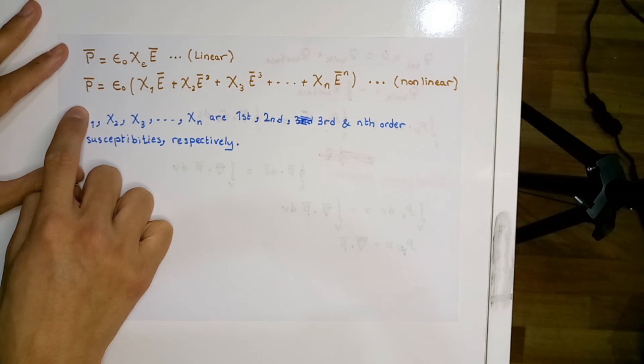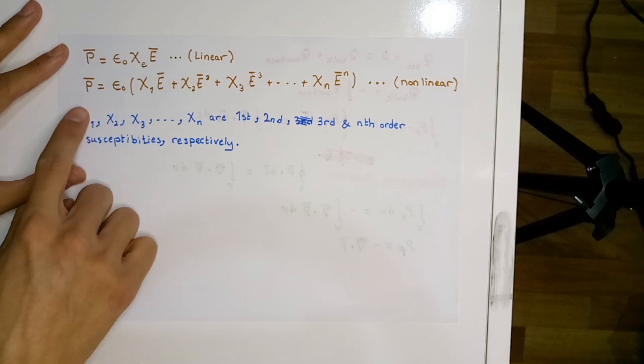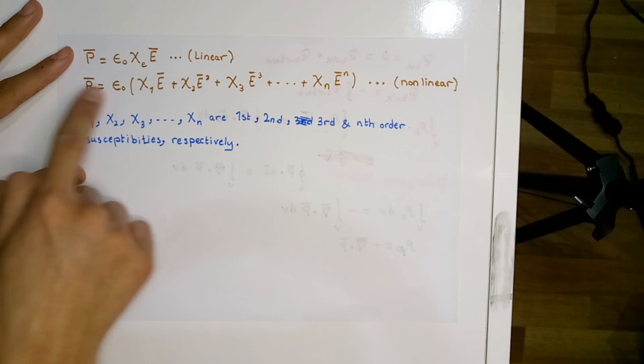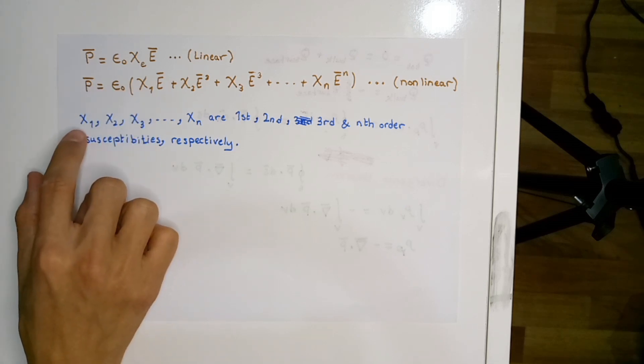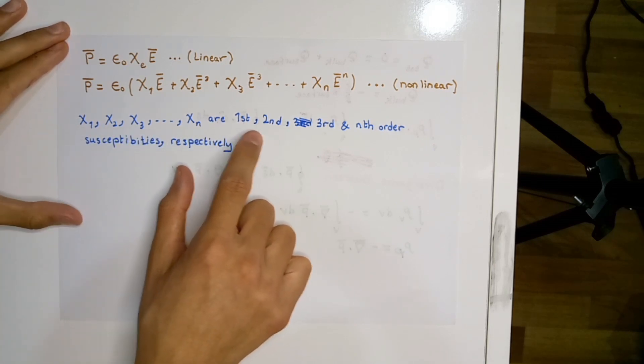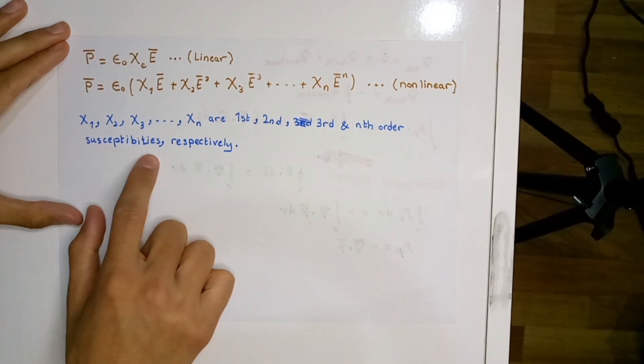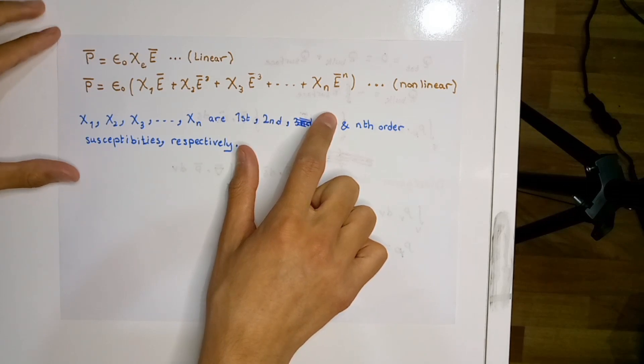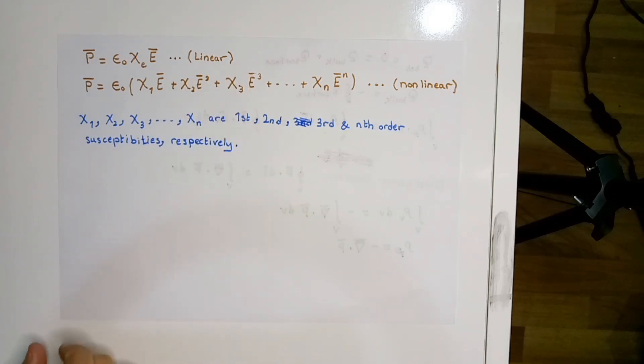Non-linear dielectrics are materials where the polarization is not directly proportional to the applied electric field and can be expressed as a function of higher powers of the applied electric field. We have χ₁, χ₂, χ₃ until χₙ, which are representing the first, second, third, and nth order susceptibilities respectively. Generally, in electromagnetics for simplicity, we are handling linear dielectrics. That's the end, see you.